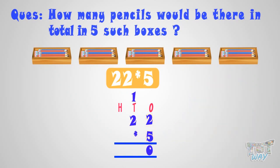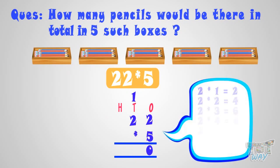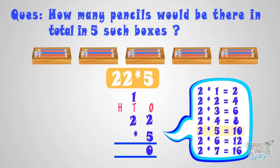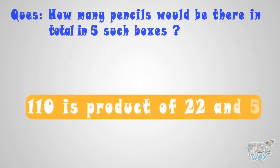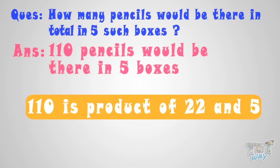Now, multiply 5 with the next number, that is also 2. 5 multiplied by 2 equals 10. And we have 1 carry. So, add it to 10. And we get 11. Now, write 11 in the product. And 110 is our answer. 110 is the product of 22 and 5. So, 110 pencils would be there in 5 boxes.